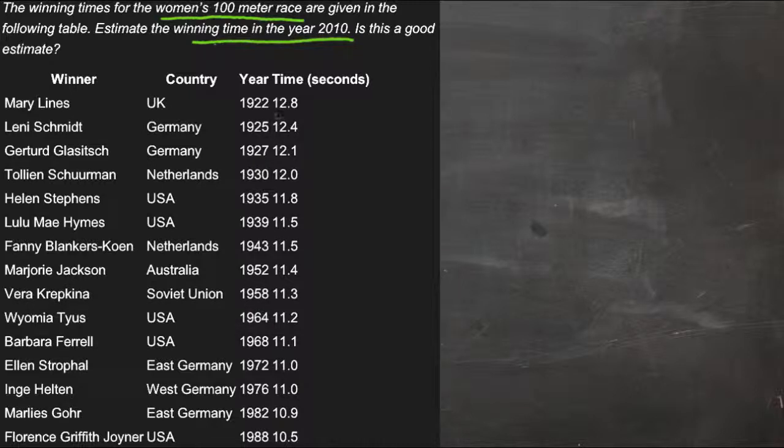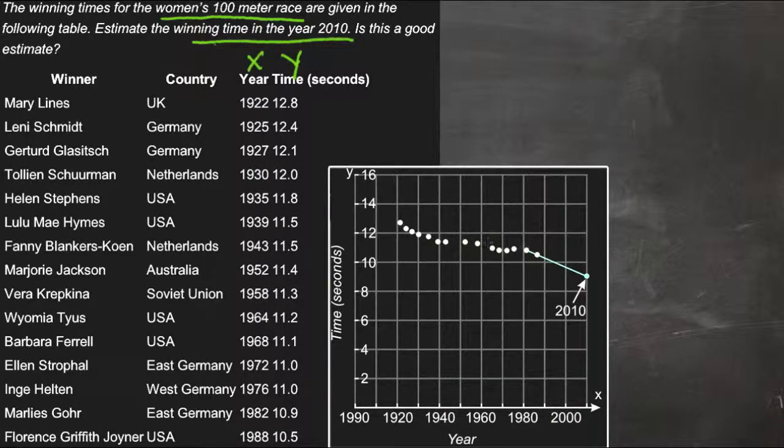So first of all, we can see here, here's all of our different points, and if we graph this on a scatter plot using time as our y and year as our x, then it would look a little like this. Here's all those points plotted on a graph.